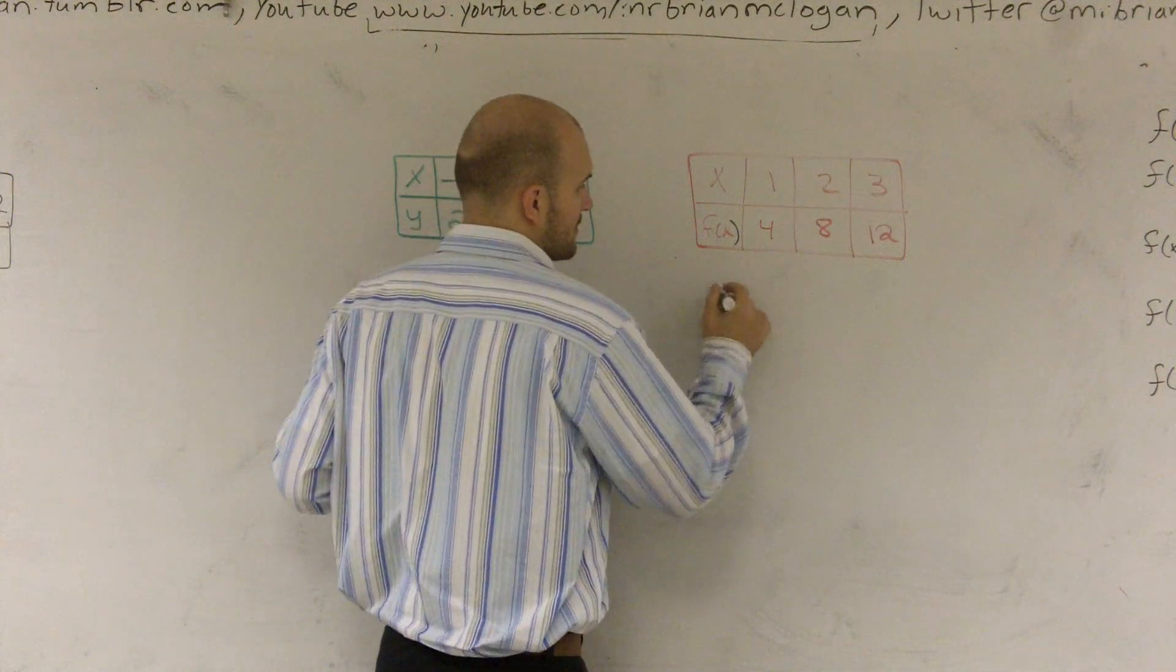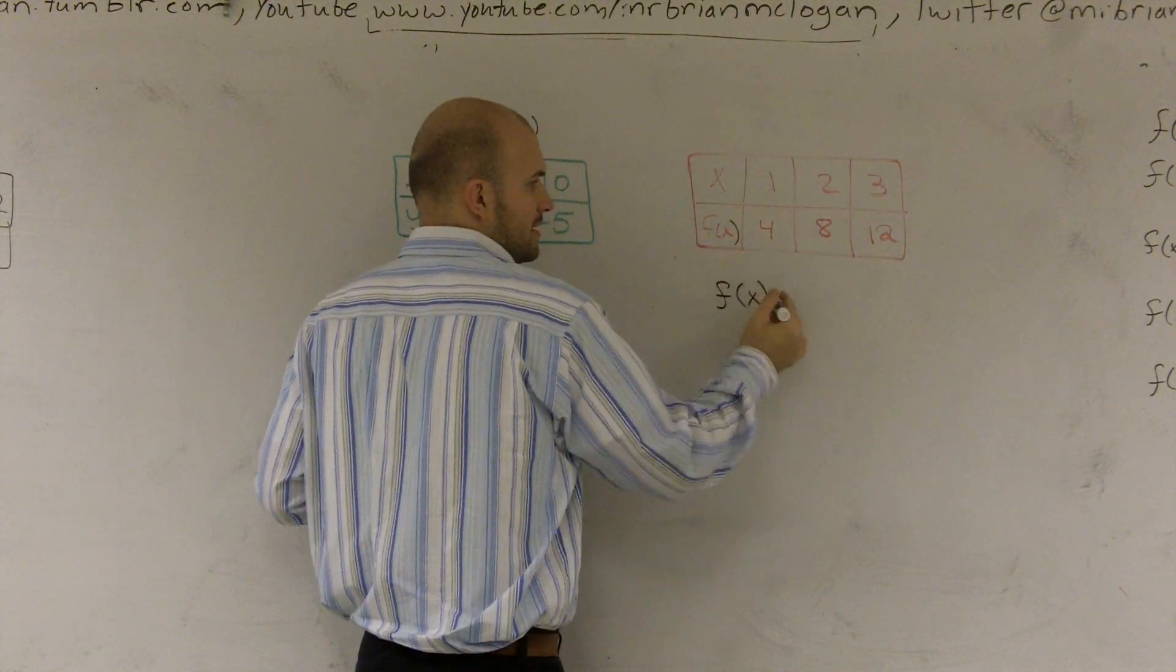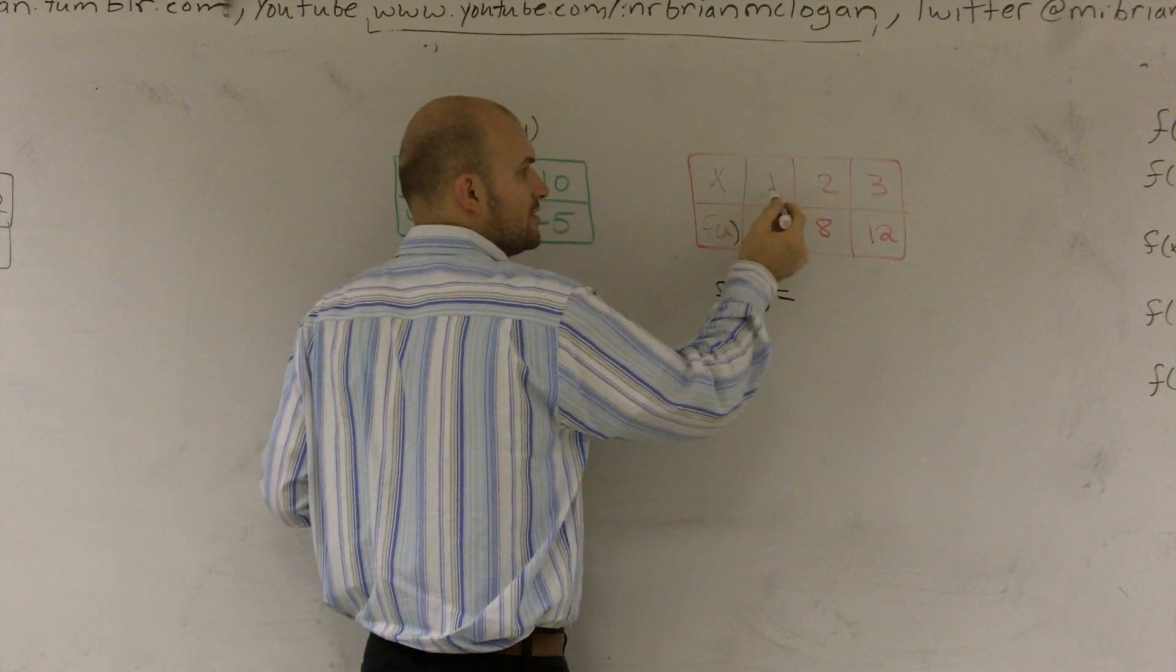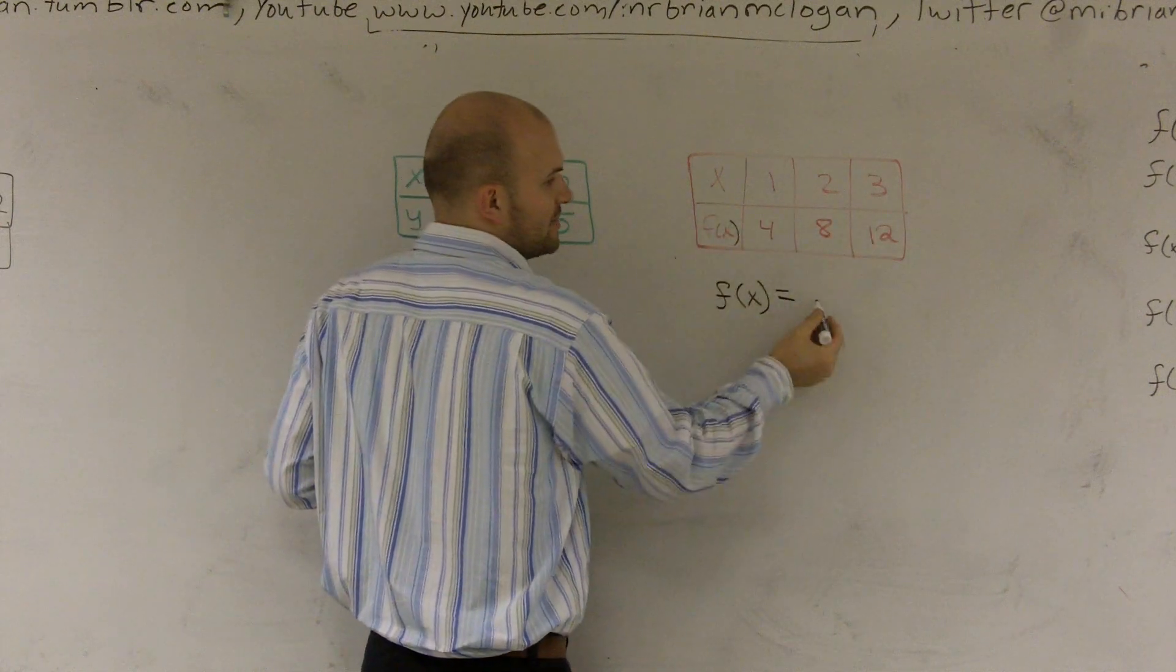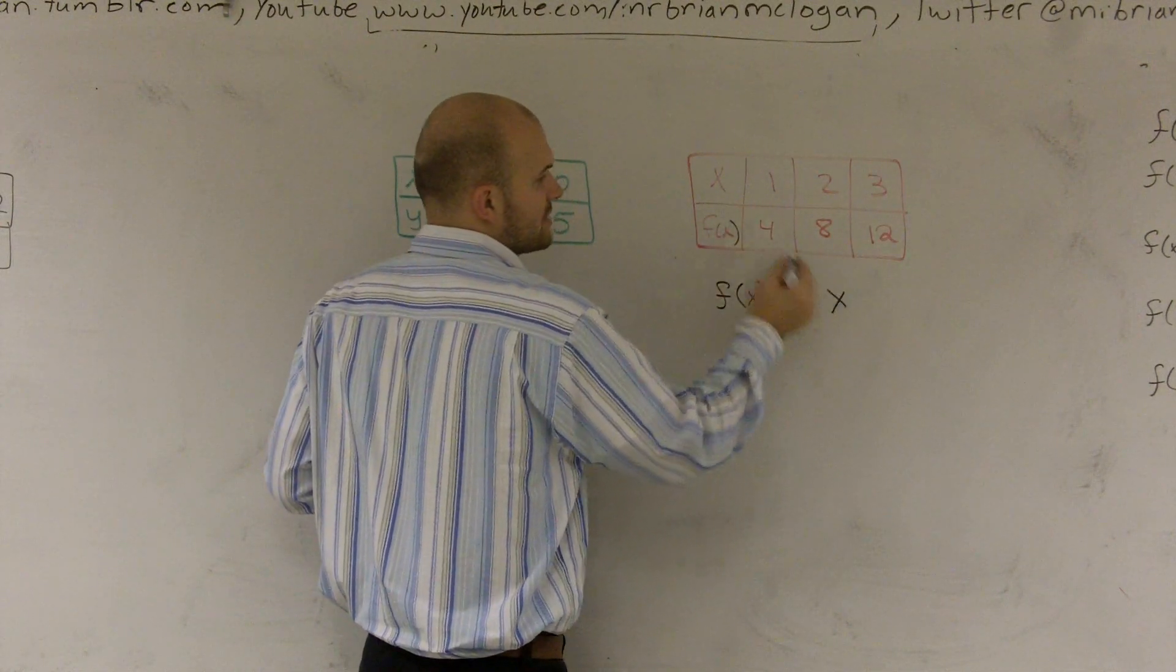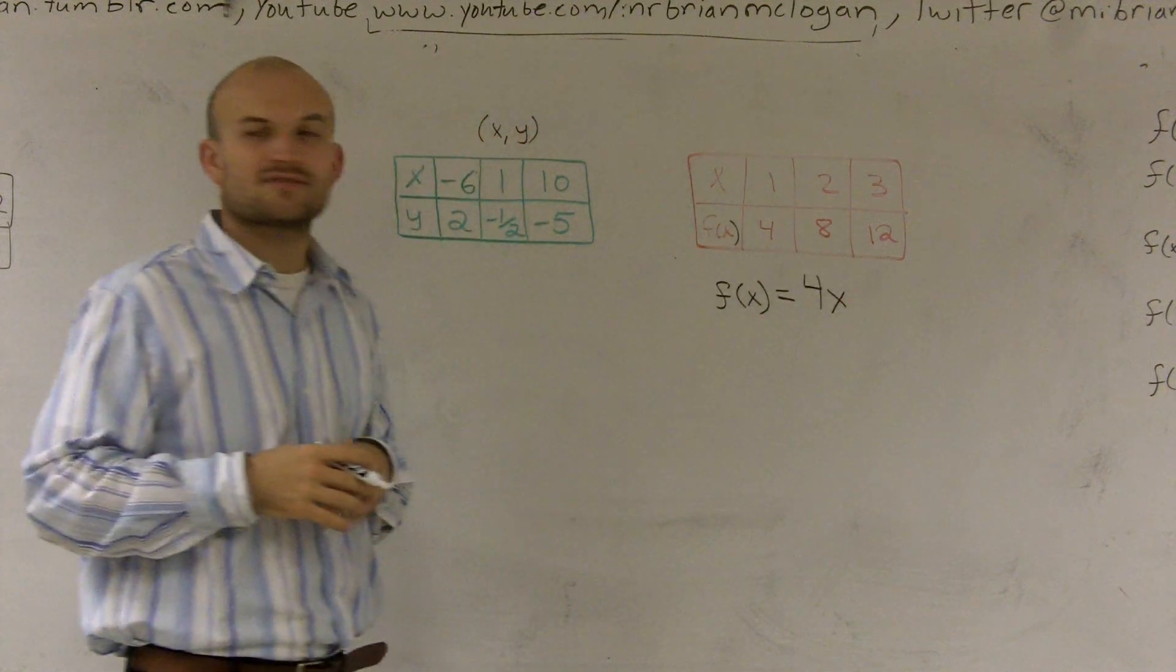So therefore, I can say that f of x, which is my output, is equal to whatever these numbers are. So it could be 1, 2, 3. Or to represent any one of the numbers, we use x. And what I need to do to x, I need to multiply it by 4. So I can just write it as 4x.